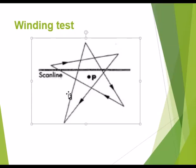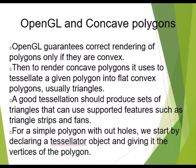The next strategy to deal with concave polygons is the OpenGL tessellator. OpenGL guarantees correct rendering of polygons only if the polygons are convex. To render a concave polygon, it uses a tessellator in order to tessellate a given polygon into flat convex polygons, usually triangles. A good tessellation should produce sets of triangles that can use supported features such as triangle strips and fans.